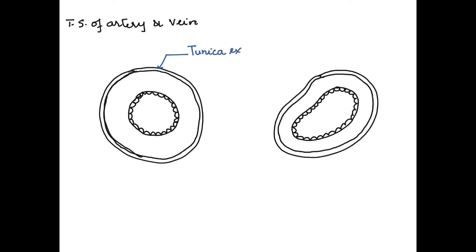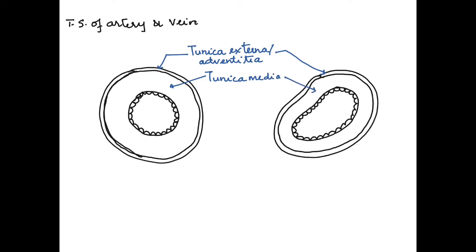Now let us label the parts. The outermost layer is called the tunica externa or tunica adventitia — this remains the same for both artery and vein. The middle layer is called the tunica media, and this middle layer shows the difference: in the artery it is much thicker, whereas in the vein it is a little thinner.